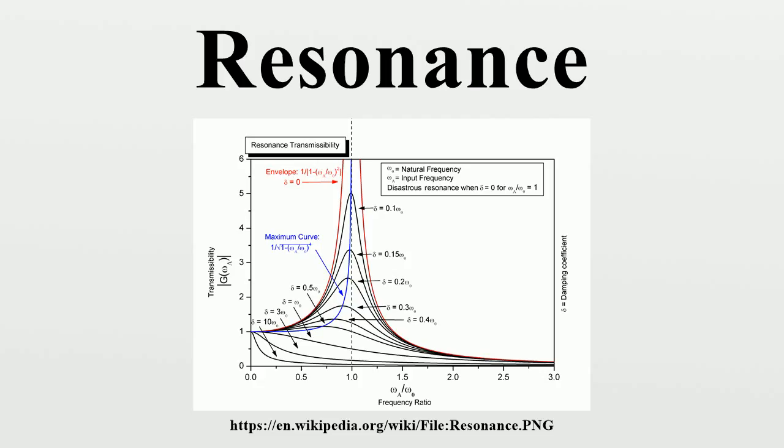A physical system can have as many resonant frequencies as it has degrees of freedom. Each degree of freedom can vibrate as a harmonic oscillator. Systems with one degree of freedom, such as a mass on a spring, pendulums, balance wheels, and LC-tuned circuits have one resonant frequency.